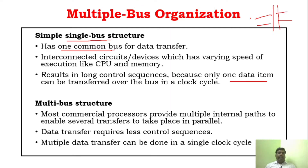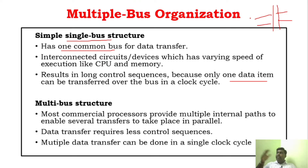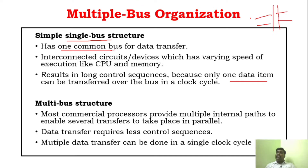In a multi-bus processor, there are multiple buses to speed up the operation. Multiple data transfers can be done — in single bus only one data can be transmitted, but in multiple bus you can transfer multiple data simultaneously.